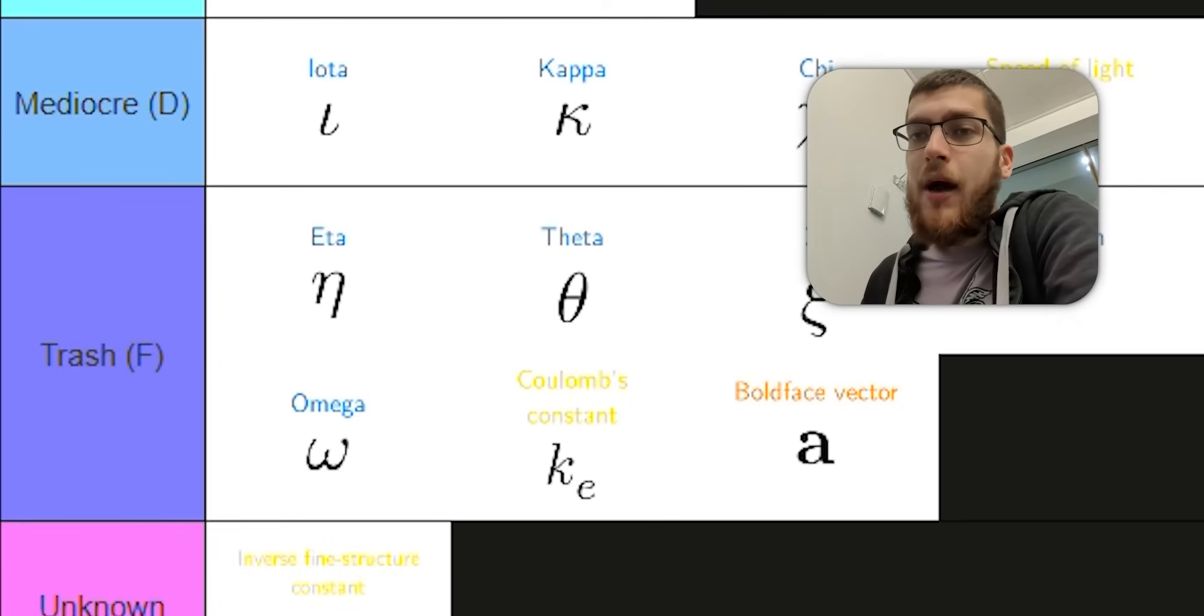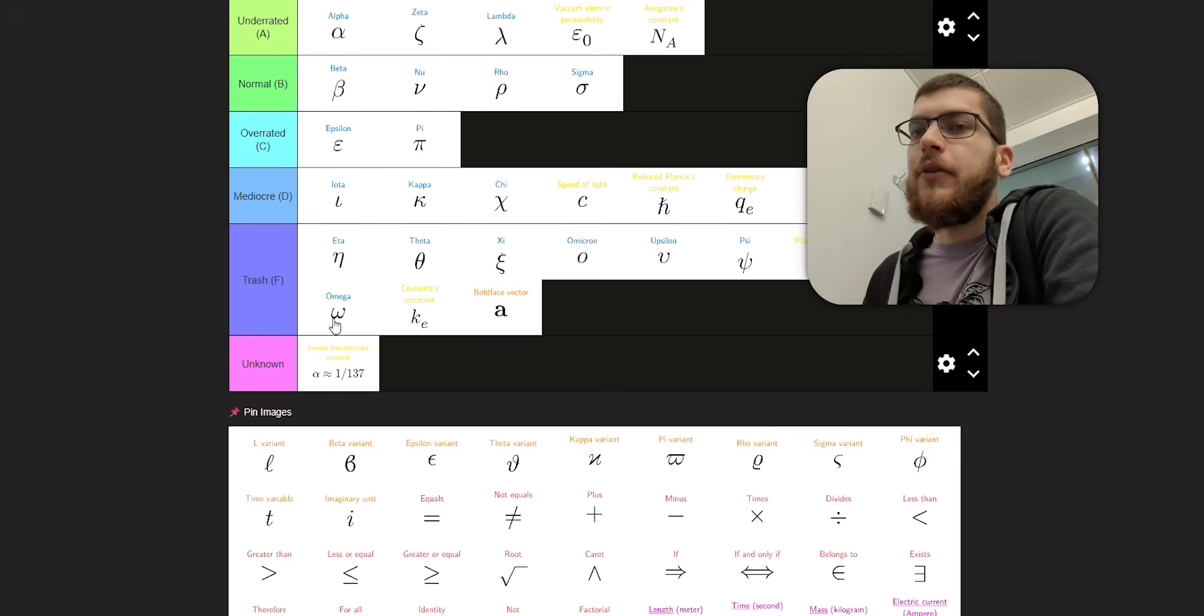Bold Face Vector. Terrible. Use the arrow. You can't even write it down. So what's the use in that? And it's also kind of difficult to see sometimes.